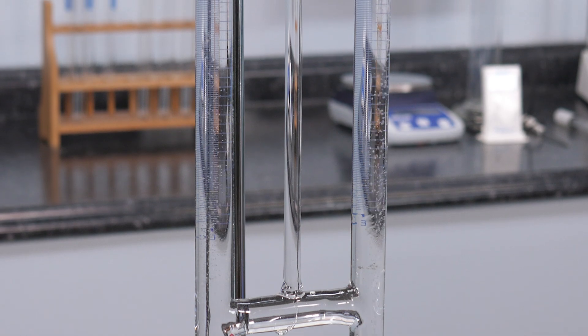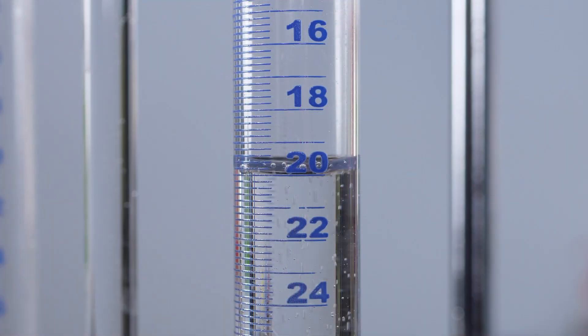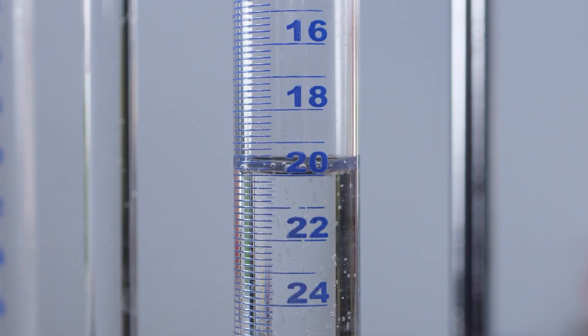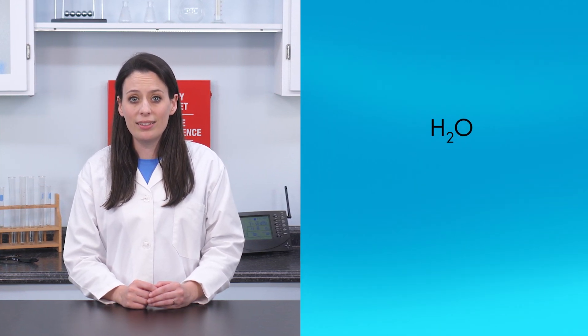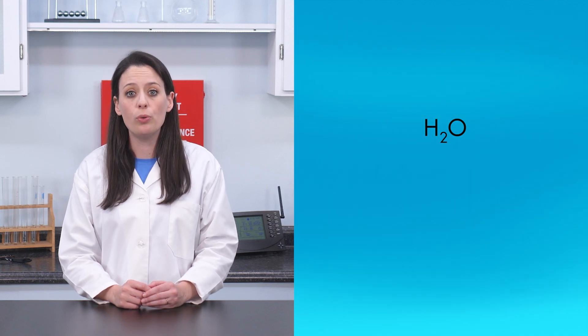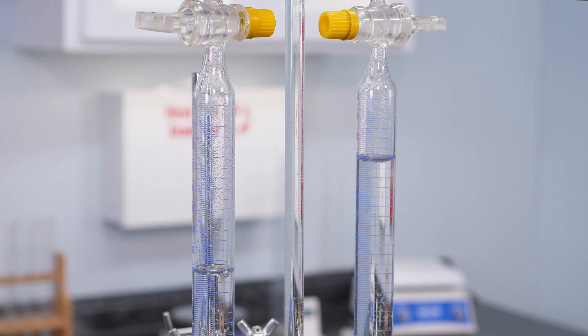We will allow the electrolysis to proceed for a few minutes and then check the results. We have collected 20 milliliters of oxygen gas in the right tube. During the same time, we collected 40 milliliters of hydrogen gas in the left tube. We have collected twice as much hydrogen gas as oxygen gas. This is because the chemical composition of water is H2O—two parts hydrogen and one part oxygen. To confirm that we have hydrogen and oxygen gas, we will perform two final tests.